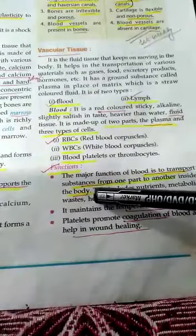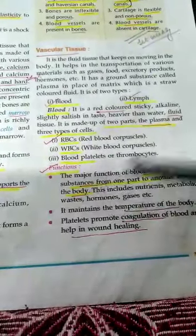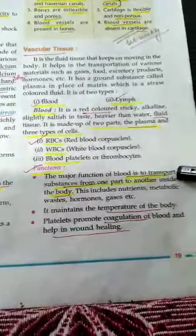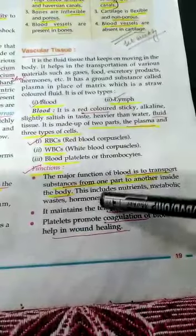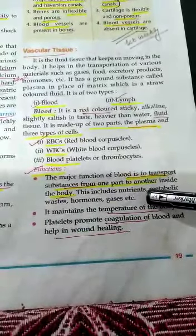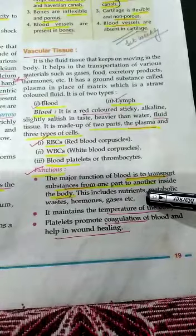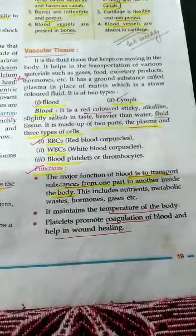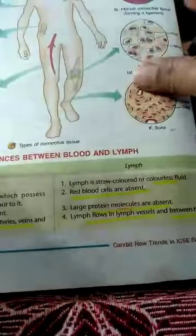One main function of blood is it helps to transport substances from one part to another inside the body. These substances may be nutrients, dissolved gases, etc.